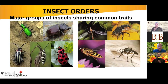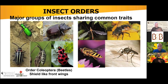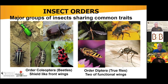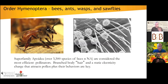Insect orders are the major groupings defined by shared common traits. Coleoptera — named by Aristotle — refers to insects whose front wings have been modified into shield-like coverings. In the true flies (Diptera), the front two wings are maintained for flight and the hind wings have been modified into structures called halteres. The order Hymenoptera, which contains bees, ants, wasps, and sawflies, has what could be considered the superstars of pollination.